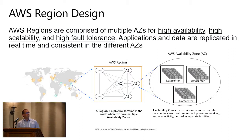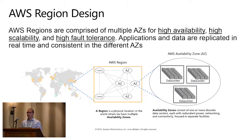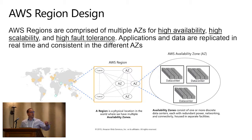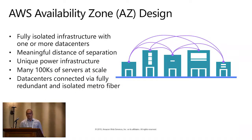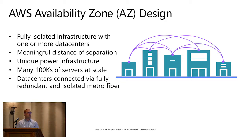Inside a region, we have availability zones — basically logical partitions of data centers. In Canada we have two; in other parts of the world there may be four or more. Within each, there are one or more data centers interconnected with redundant networking and power supplies in separate facilities. Each availability zone is fully isolated infrastructure. We don't publish the distance between them, but there is a meaningful distance of separation. One of our distinguished engineers, James Hamilton, has videos on YouTube going into really interesting detail on how we build our infrastructure at scale.